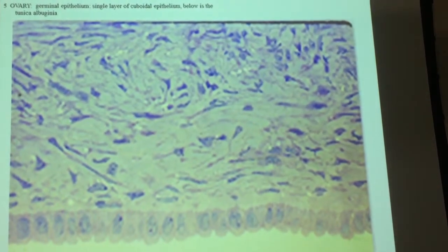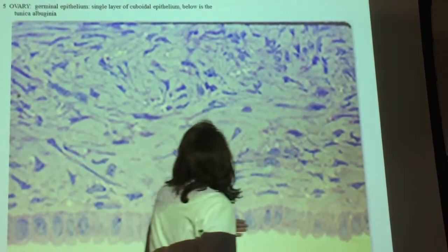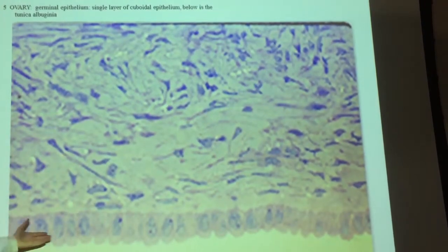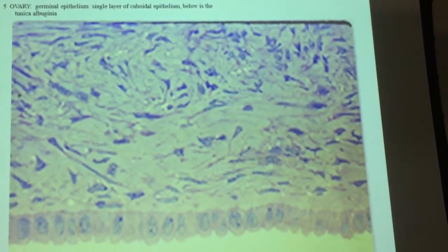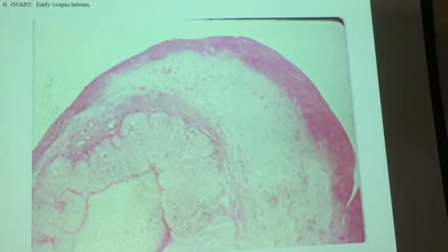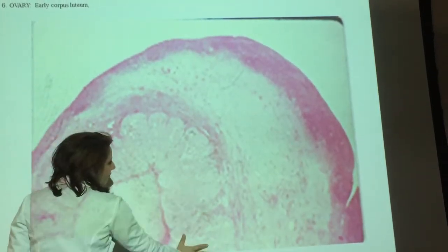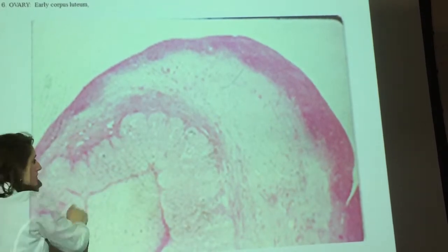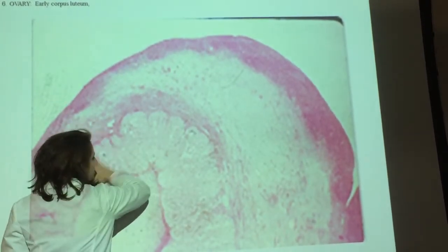This is the ovary. This is the epithelial layer — that means simple cuboidal epithelial layer. This is a corpus luteum just starting to form. When you go home, take a yellow highlighter — this is slide number six — make sure you make that yellow.